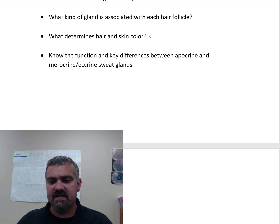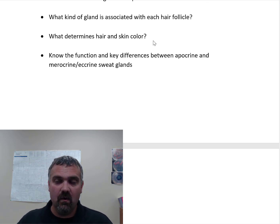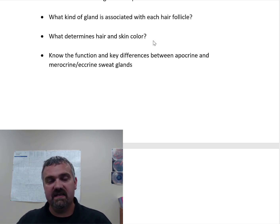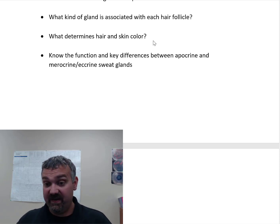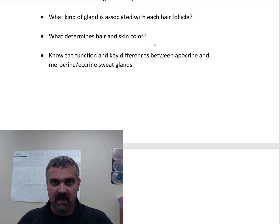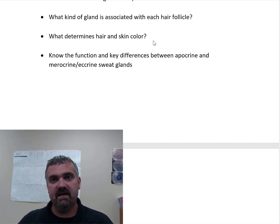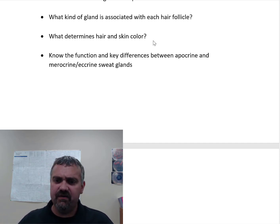What determines your hair and skin color? The amount of melanin plays a big role, but other things matter too, especially for skin. Carotenoids — the amount of carotenes in your body can affect skin color; if you eat a lot of carrots, you can actually start to get an orange tint. So melanin, carotenoids, and blood supply all play a role in skin color, but hair color is primarily melanin.